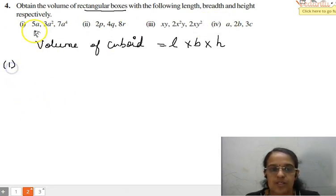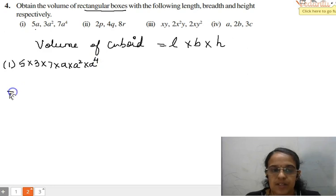For the first one it is 5A into 3A square into 7A to the power of 4. So it is nothing but 5 into 3 into 7 into A into A square into A to the power of 4. So here we can take 7 times 3 is 21, so 5 into 21.